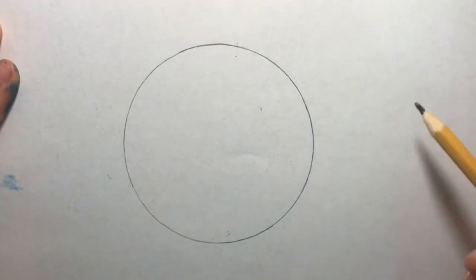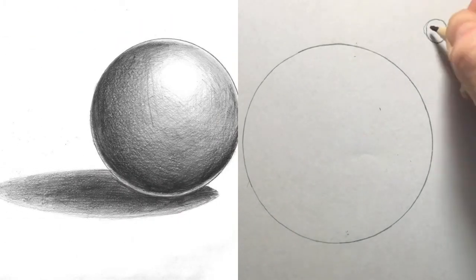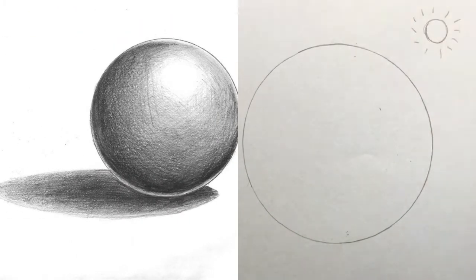The next thing you'll want to do is draw your light source above and to the right of your sphere. It's also a good idea to be looking at a sphere, so I pulled up a picture of one from the internet that I can refer to.